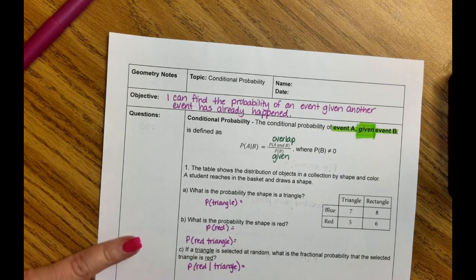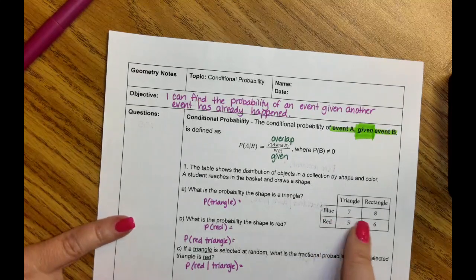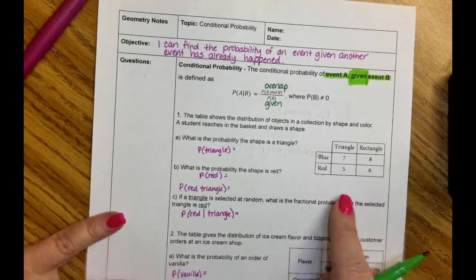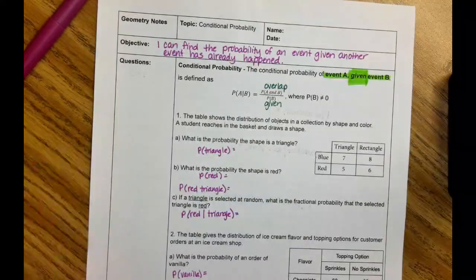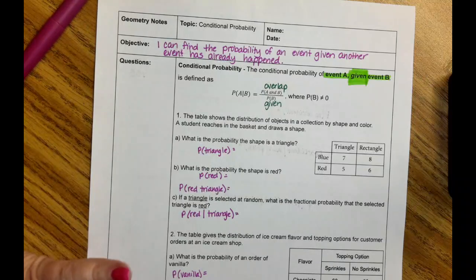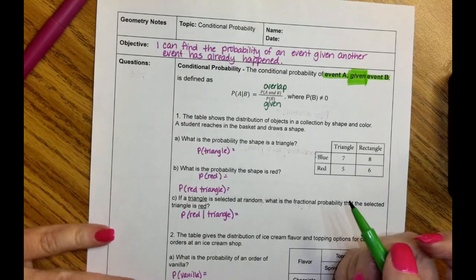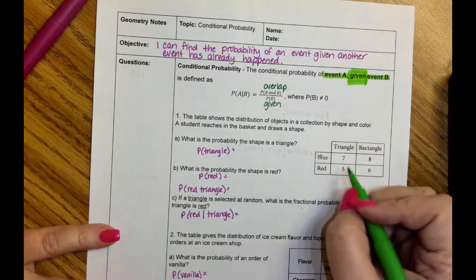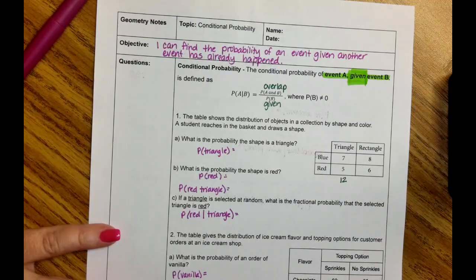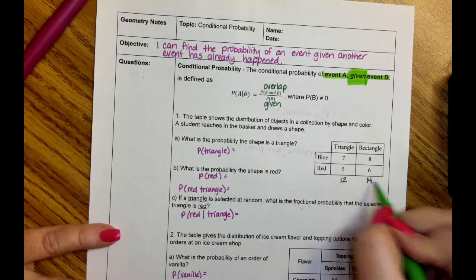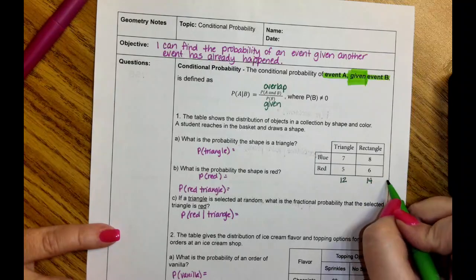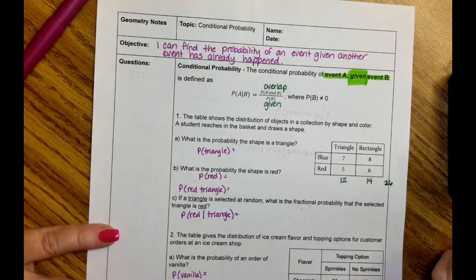We have a table with red and blue triangles and rectangles. The first question: what is the probability that the shape is a triangle? Remember, probability is what I want to happen over what can happen. I have a bag full of red and blue triangles and rectangles. What's the probability that I'm going to reach in and draw a triangle? I don't care what color — I just want a triangle. Well, there are 12 triangles and 14 rectangles, which means there are 26 shapes in the bag.